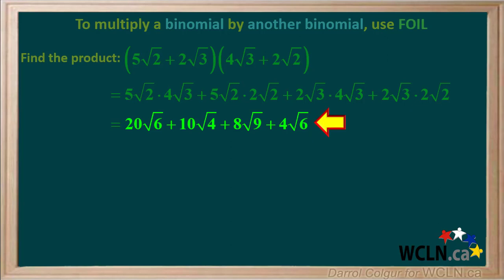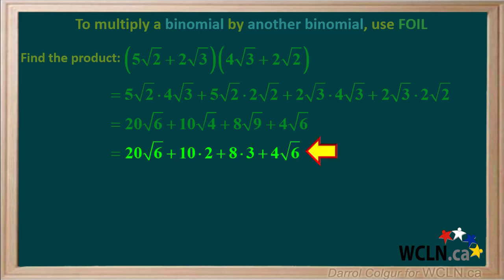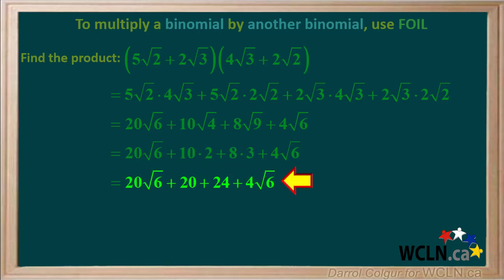So we are left with 20 root 6 plus 10 root 4 plus 8 root 9 plus 4 root 6. The square root of 4 is 2 and the square root of 9 is 3, so we can simplify. 10 times 2 is 20 and 8 times 3 is 24, giving us 20 root 6 plus 20 plus 24 plus 4 root 6.